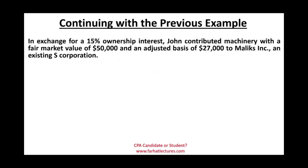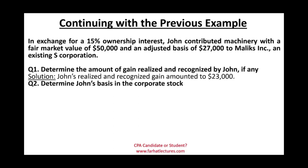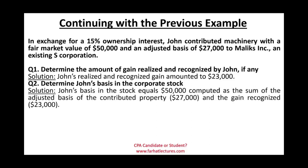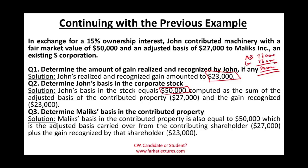Returning to the John/Malik's example: John's gain realized and recognized was $23,000. John's basis in the corporate stock equals $50,000 — starting with the adjusted basis of $27,000, then adding the $23,000 gain on which he paid taxes, so $27,000 plus $23,000 equals $50,000. Malik's Inc.'s basis in the contributed property is also $50,000 — the shareholder's adjusted basis of $27,000 plus the gain recognized of $23,000.